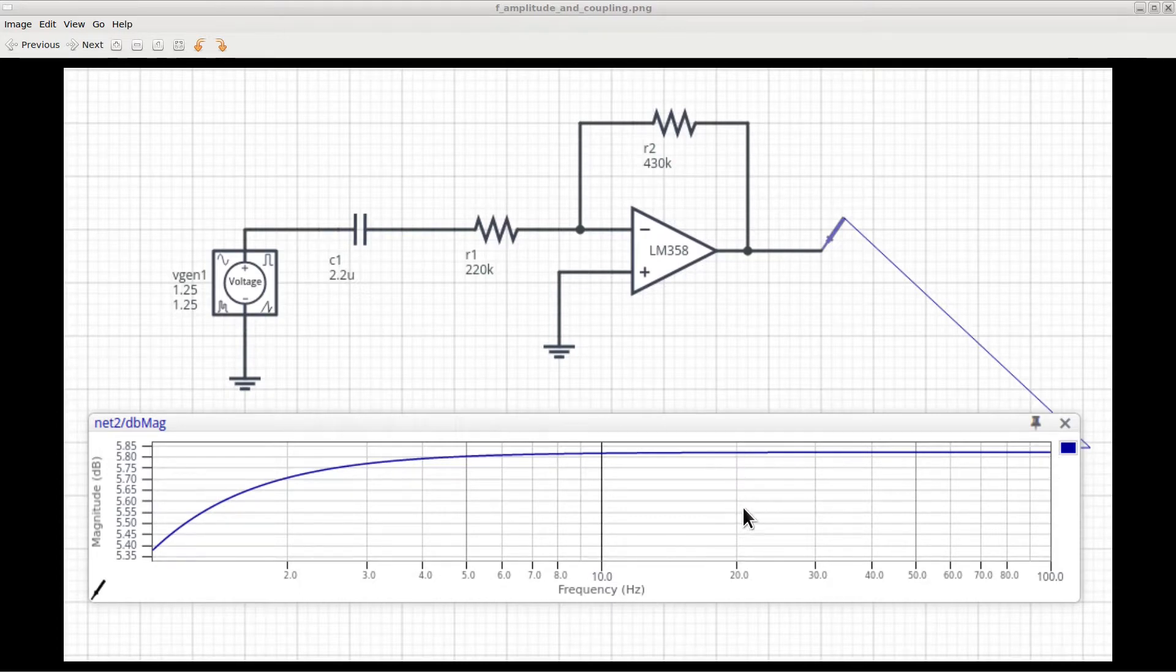Note how from 20 Hz and forward, the curve is practically flat, and so there is no attenuation. In fact, there is a gain of about 5.35 dBs. If I had R2 set to 440k, the gain would have been exactly 6 dBs, which is the value we would expect from an amplifier with a gain of 2.